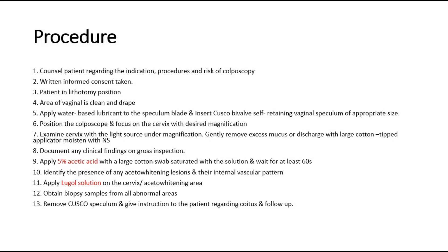Position the colposcope and focus on the cervix, adjusting the magnification. With the light source and under magnification, examine the cervix and document any clinical findings on gross inspection. Next, apply the first solution — 5% acetic acid — with a large cotton swab and wait for at least one minute.